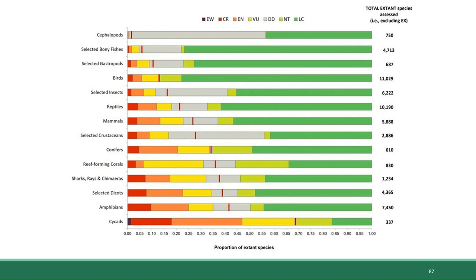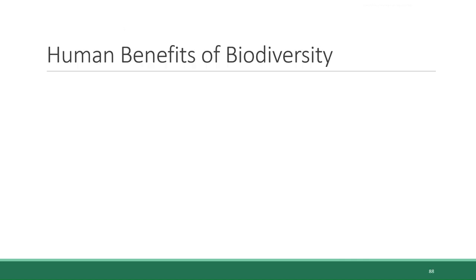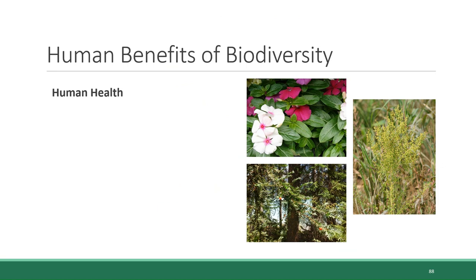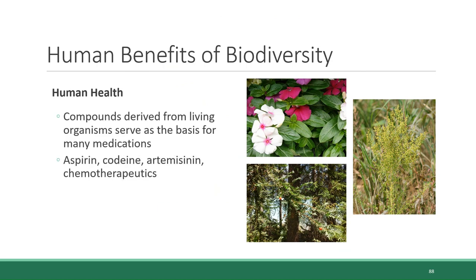For our final topic, we're going to briefly talk about why you should care — why does it matter that biodiversity loss is happening, and in what ways do humans benefit from a biodiverse world? One benefit we derive from biodiversity is health, specifically medicine. Many medicines are based on compounds derived from living organisms, including aspirin, codeine, artemisinin — a drug used to treat malaria — and chemotherapeutic agents used to treat cancer. The Madagascar periwinkle and the Pacific yew are both sources of cancer treatment drugs, and sweet wormwood is the source of artemisinin, recently discovered as a treatment for malaria.